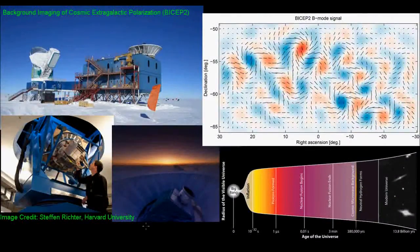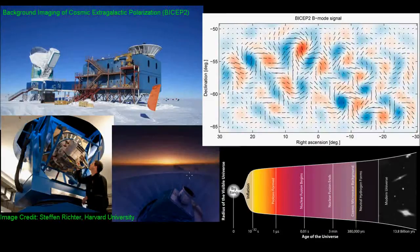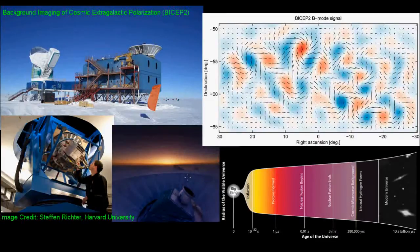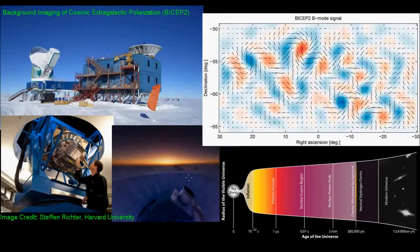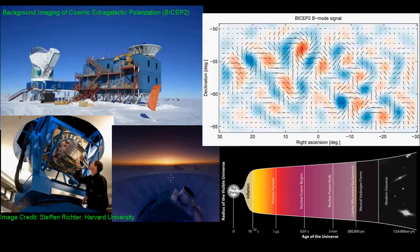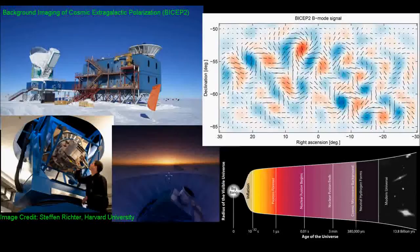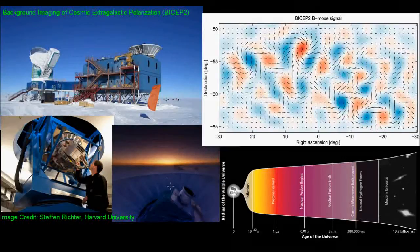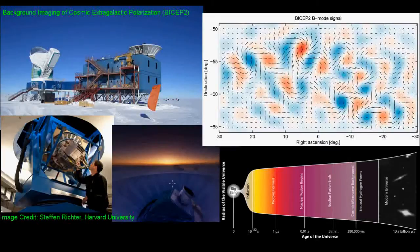This is the BICEP2 telescope, and it is specifically designed to measure polarization in the cosmic microwave background. And it's located at the south pole, where the extremely cold and dry air, as well as the high altitude, are optimal for observing the CMB radiation. If you want to observe the polarization of the CMB, the south pole is the best place on earth to do it.